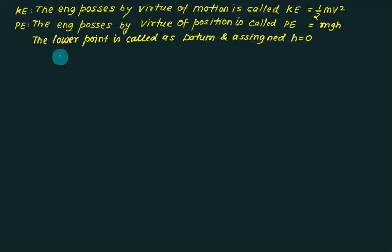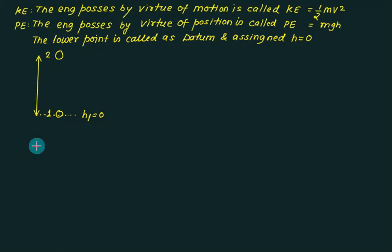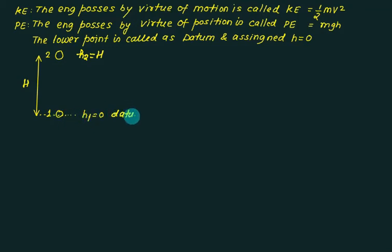In this problem, we have one point here and another point here. The lower value is assigned as h1, and the vertical difference — if the total height is capital H — this value is taken as h2 equals capital H. The lowest point in the figure is called the datum, and with reference to the datum, you measure the height of the second point.